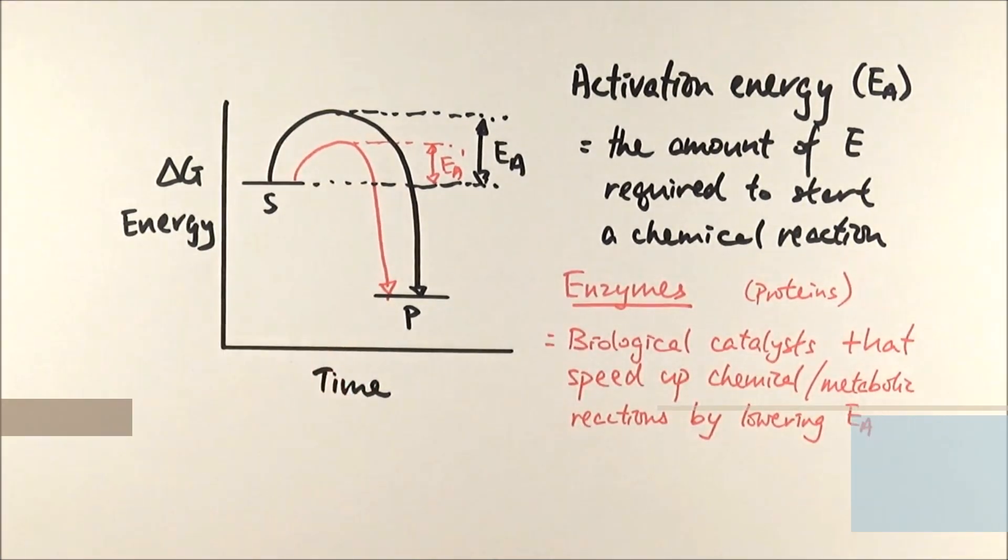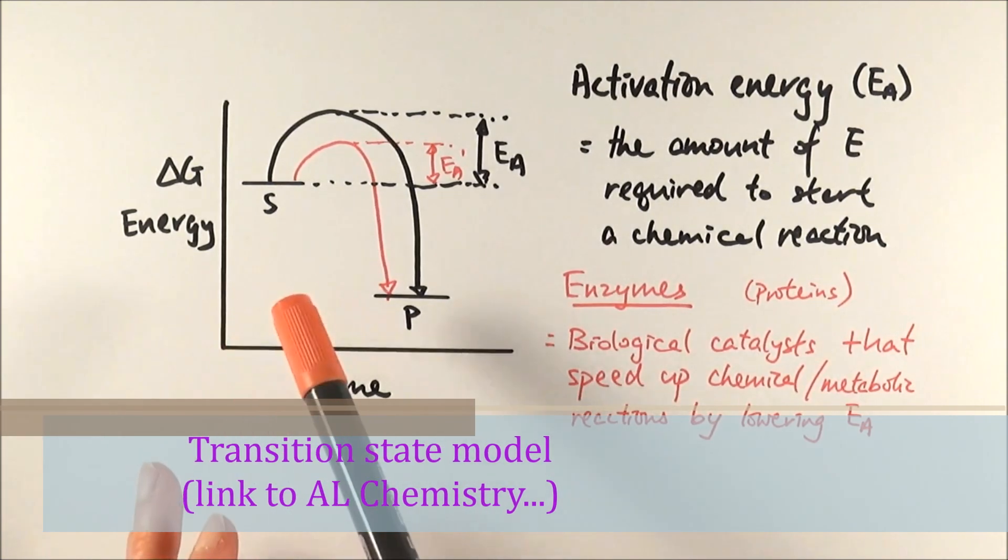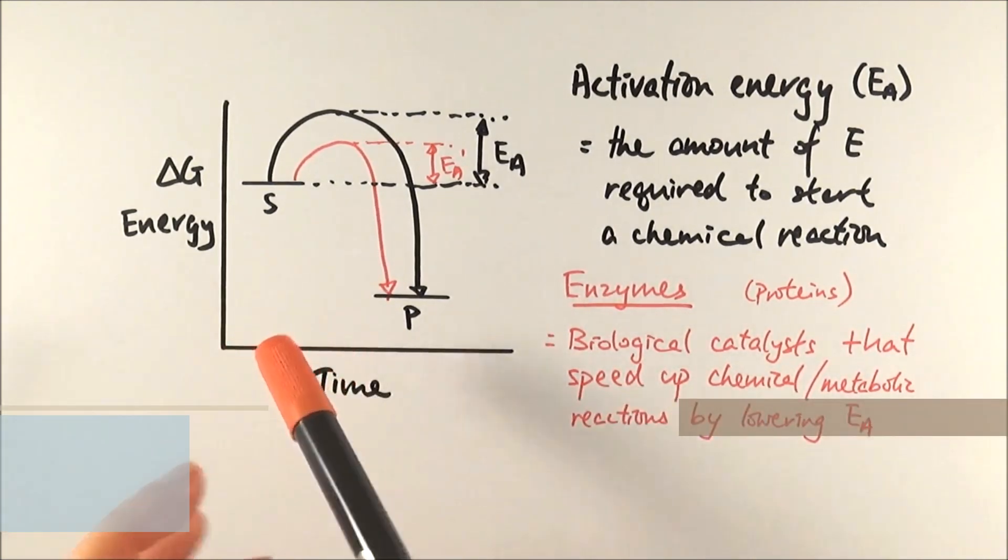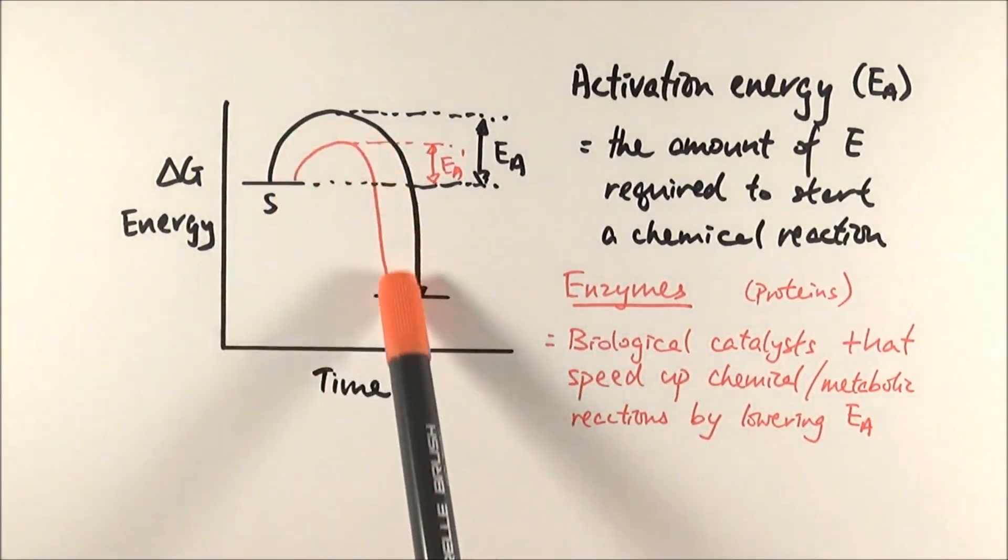This is what we call the transition state model, where we say that specific chemicals have to be switched or changed to a certain shape, what we call a transition state structure, in order for the chemical reaction actually to occur. So that will be of particular interest for those of you who are doing chemistry.